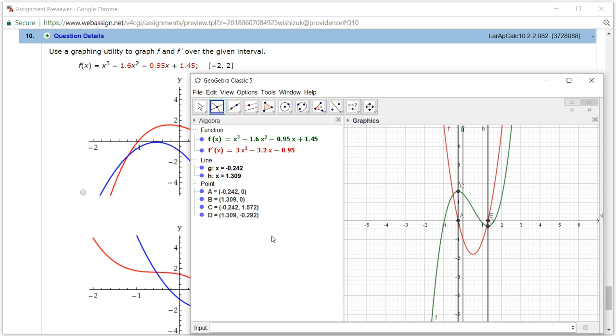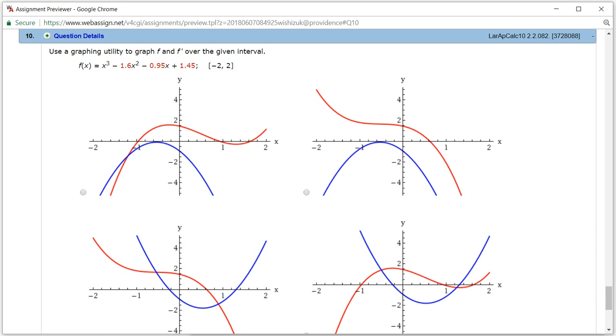So we got these points. So you have negative 0.242 and 1.572. So those are the points. So let's type those guys in. So I'm going to just, let's see, move over.